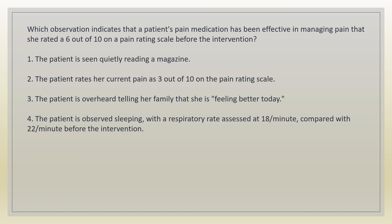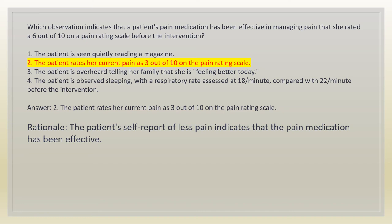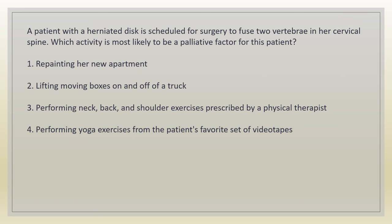Which observation indicates that a patient's pain medication has been effective in managing pain that she rated as 6 out of 10 before the intervention? 1. The patient is seen quietly reading a magazine. 2. The patient rates her current pain as 3 out of 10 on the pain rating scale. 3. The patient is overheard telling her family that she is feeling better today. 4. The patient is observed sleeping with a respiratory rate of 18 per minute compared with 22 per minute before the intervention. Answer: 2. Rationale: the patient's self-report of less pain indicates that the pain medication has been effective.